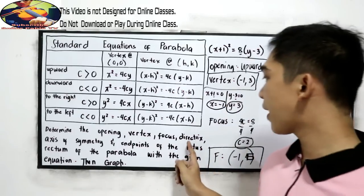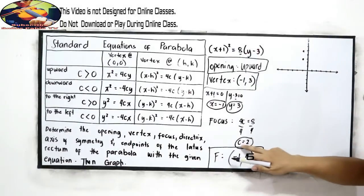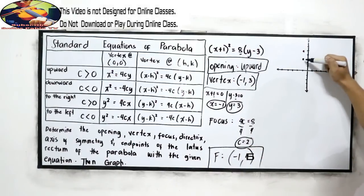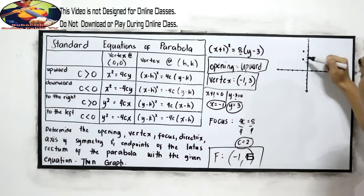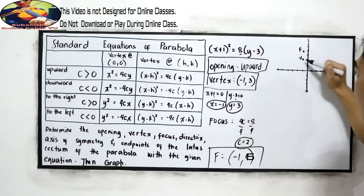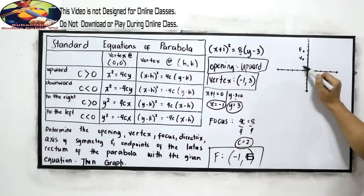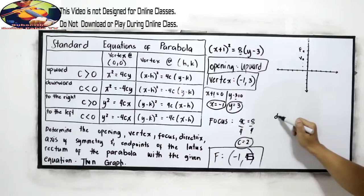Next, directrix. Since we have c = 2, so we're going to locate 2 units down from our vertex. This is our vertex, and this is our focus. 2 units down. So 1, 2. So that is directrix.